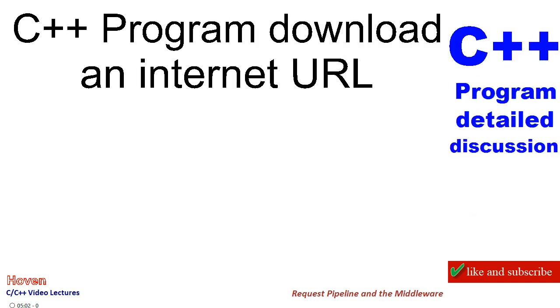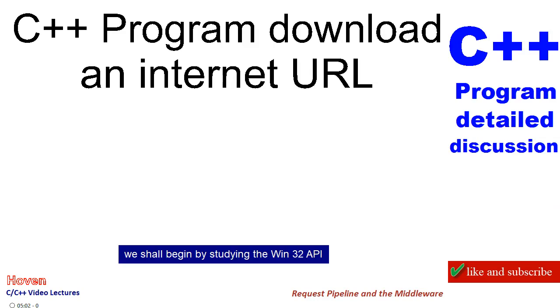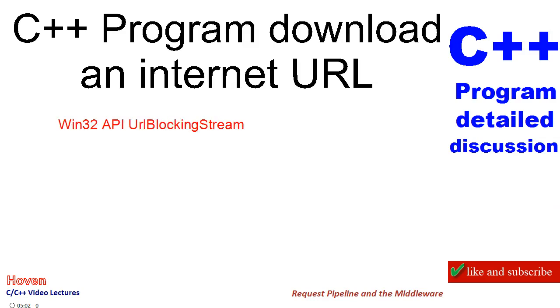How to download an Internet URL? We shall begin by studying the Win32 API. Let us have a look at the function URLOpenBlockingStream.